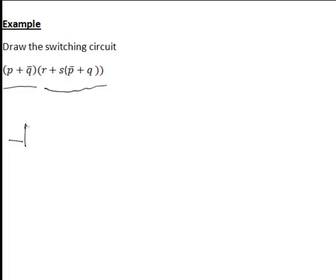So P plus Q bar means P is connected there in parallel with Q bar, which means it will look like that. But then that's clearly an AND there, so that's then connected in series. Hence, I'll draw this horizontal line here.